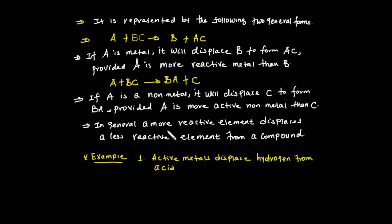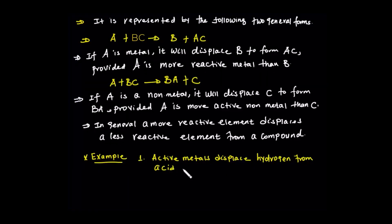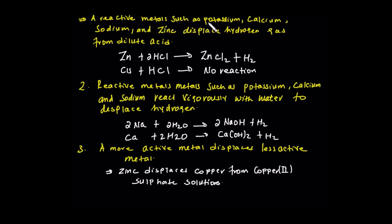Generally, more reactive elements can displace less reactive elements from their compounds. For example, active metals like potassium, calcium, sodium, and zinc can displace hydrogen gas from dilute acid.